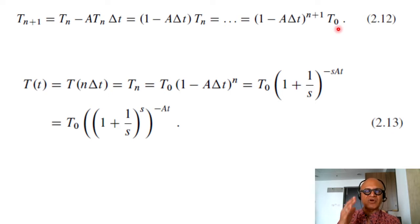So 1 minus A delta T to the N plus 1 times T_0 where T_0 is the time step at N equals 0. Remember N was 0, 1, 2, 3 and so forth. So for any N the expression becomes 1 minus A delta T to the N plus 1 times T_0. So the term gets multiplied along the way.